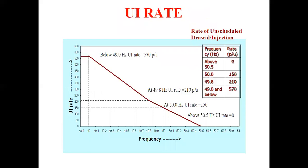The UI rate is shown in a graph: above 50.5 Hz the rate per unit is 0; at 50.0 Hz it is 150 paise; at 49.8 Hz it is 210 paise; at 49.0 Hz and below it is 570 paise. This graph shows frequency on one axis and UI rate on the other, accounting for excess power demand.